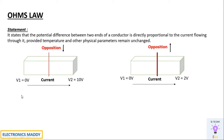Let us consider a typical example to understand what Ohm's Law is all about. We have two figures. In figure one, the potential at V1 is equal to 0V. Let us consider this as a conductor. V1 is equal to 0V and V2 is equal to 10V, so the potential difference here is 10V. Higher will be the current flowing through it, so lesser will be the opposition. Now in another example where V1 is equal to 0V and V2 is equal to 2V, the difference in potential is only 2V. That means lesser will be the current flowing through it — more is the opposition for the current to flow through it.